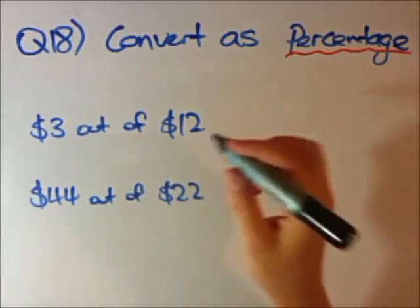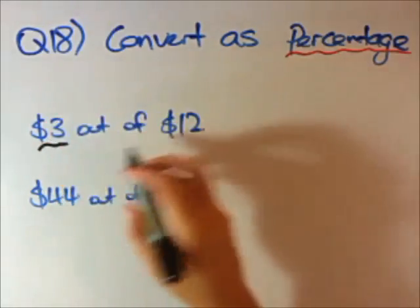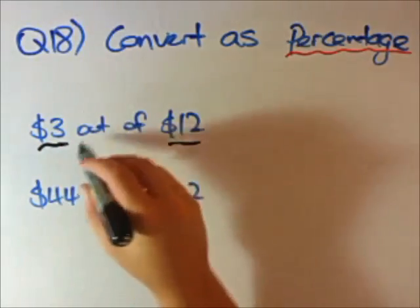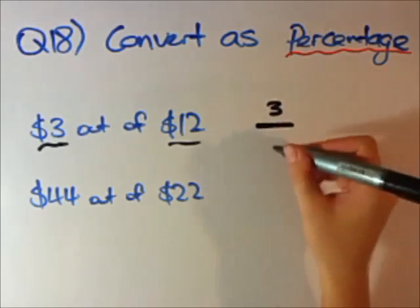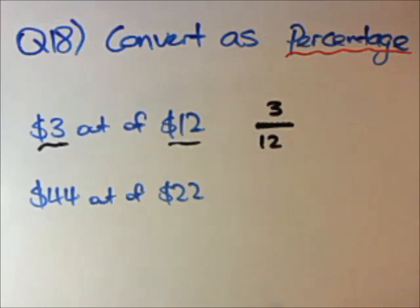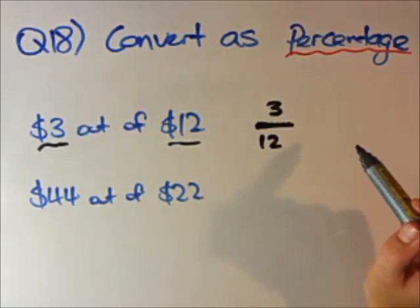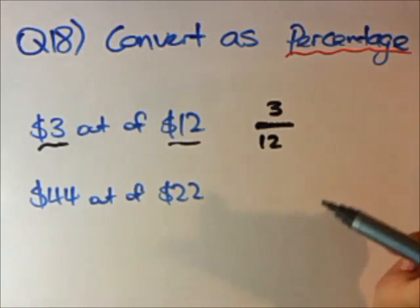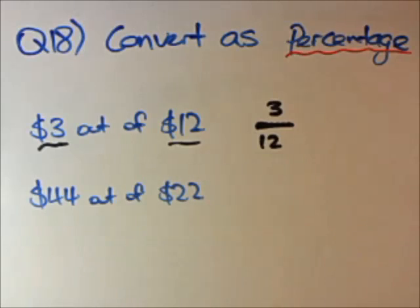The easy way to do this is to convert it straight away as a fraction — this out of this. The 'out of' sign is pretty much a division sign. So we go 3 out of 12. Now it's a fraction, but we want to convert it as a percentage. There are a few different ways, but we're going to convert this fraction into a decimal first, because once it's a decimal we can quite easily convert it into a percentage using a decimal point conversion technique.